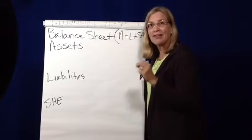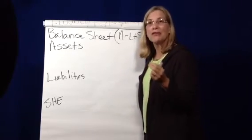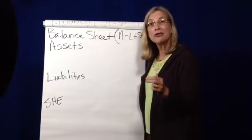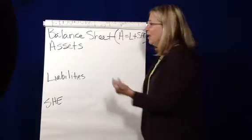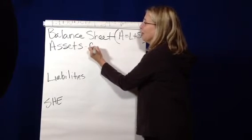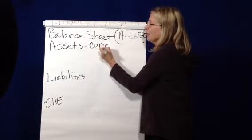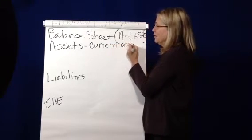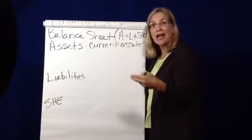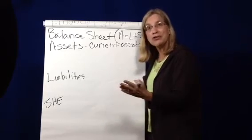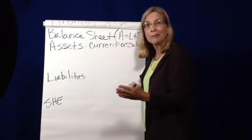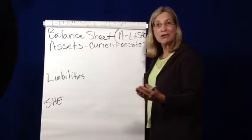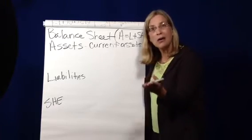Now let's talk about assets. Assets are something that has future or potential value to a business, and there are two basic buckets. The first includes current assets — those things that will be converted to cash within the next accounting period, which is usually a year. Current assets include things like cash, inventory, supplies, and accounts receivable.